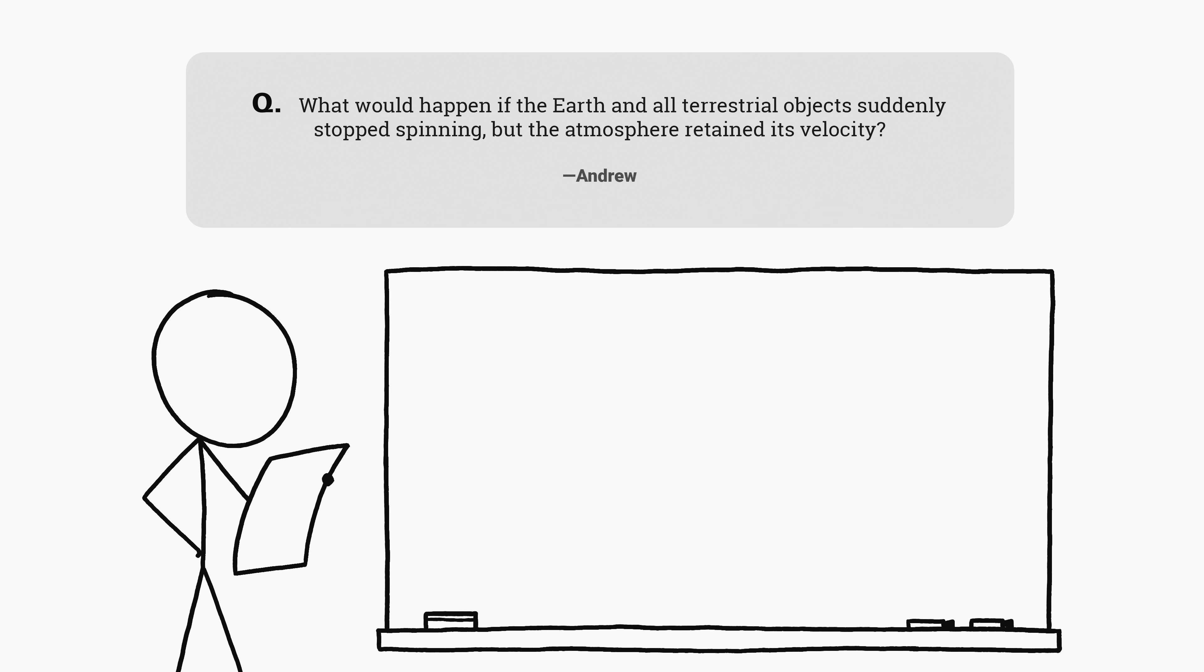This is a question from Andrew, who asks, what would happen if the Earth and all terrestrial objects suddenly stopped spinning, but the atmosphere retained its velocity? Well, first, nearly everyone would die. Then things would get interesting.